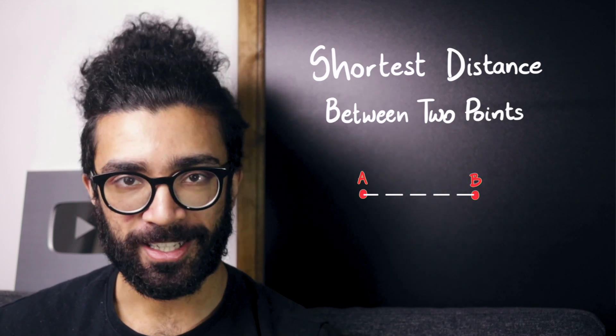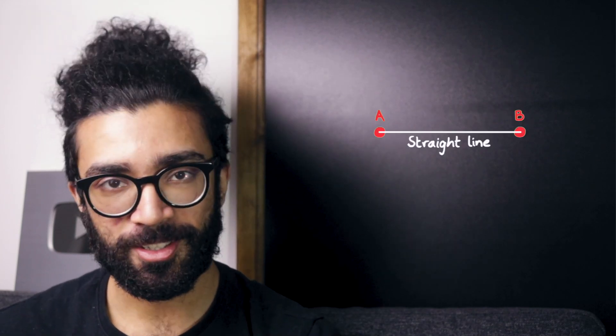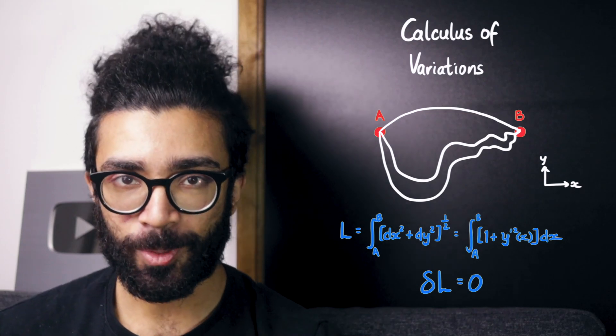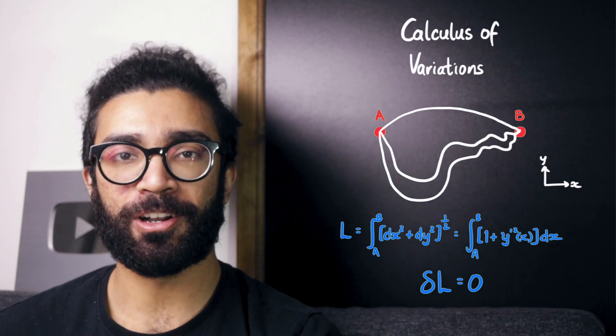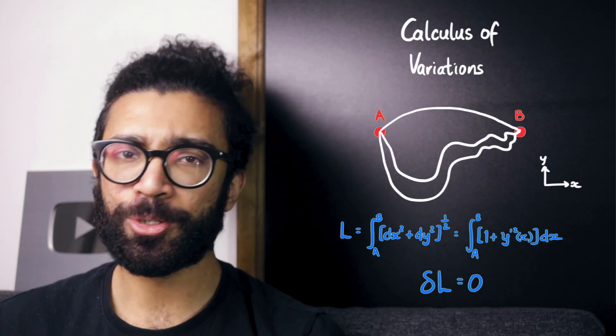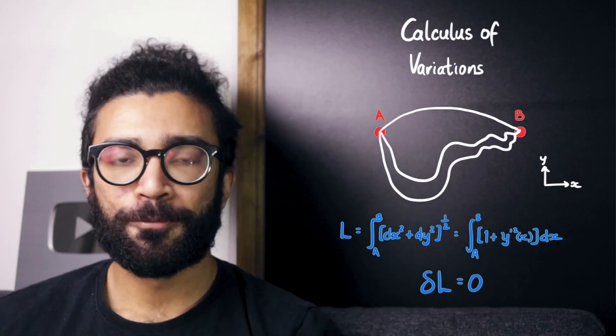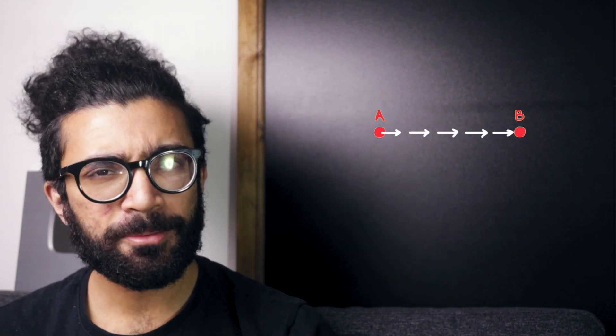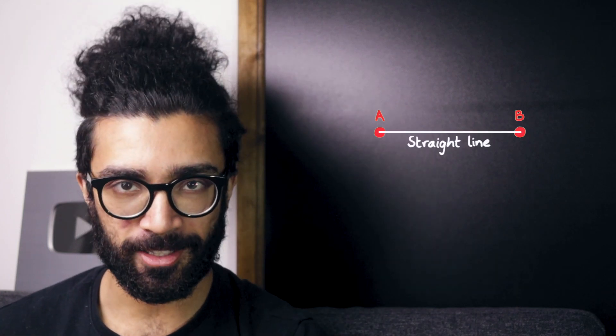Now many of us might be familiar with the idea that the shortest distance between two points is a straight line. There's a rigorous mathematical way to prove this using the calculus of variations, but actually there's an intuitive way to think about this as well. For example, if we wanted to go from point A to point B, then it seems reasonable that the shortest distance between these two points must be the straight line that connects them.